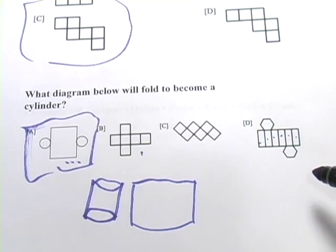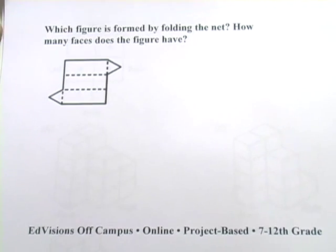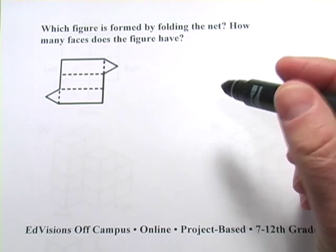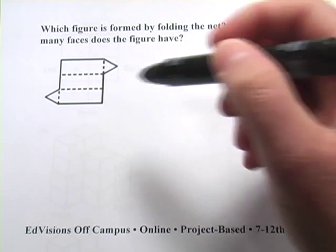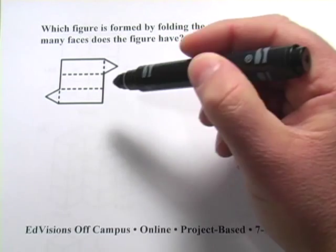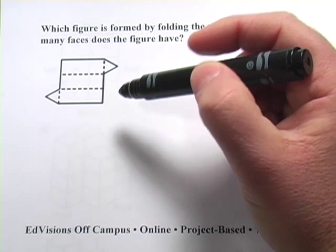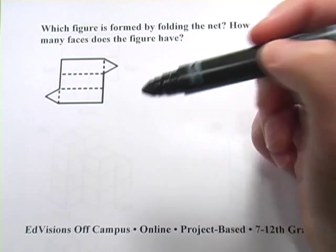Okay, this one says which figure is formed by folding the net? How many faces does the figure have? And you might be able to see this has got three long sides. And if you folded those, they would make sort of a triangular shape. And then these two triangles would be the end. And so you'd have a triangular prism.